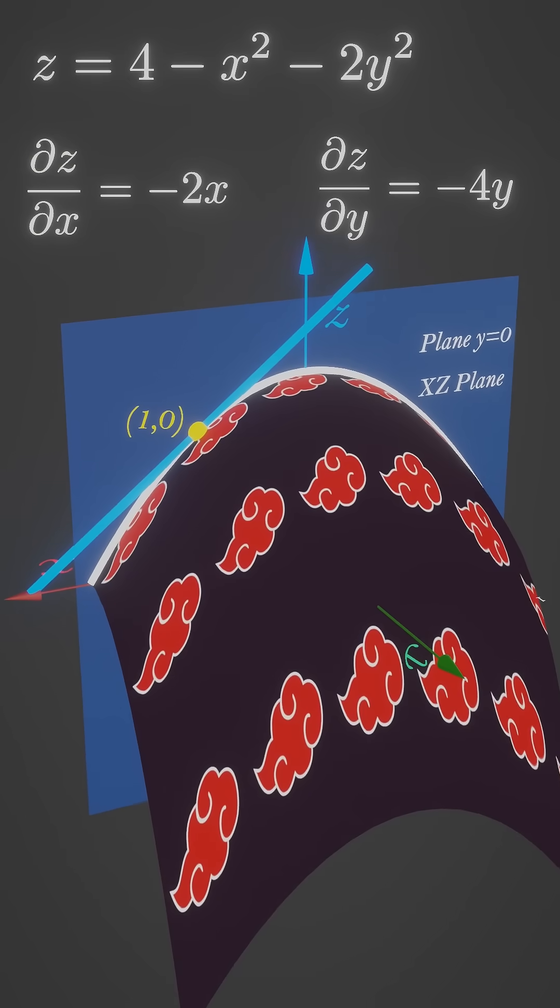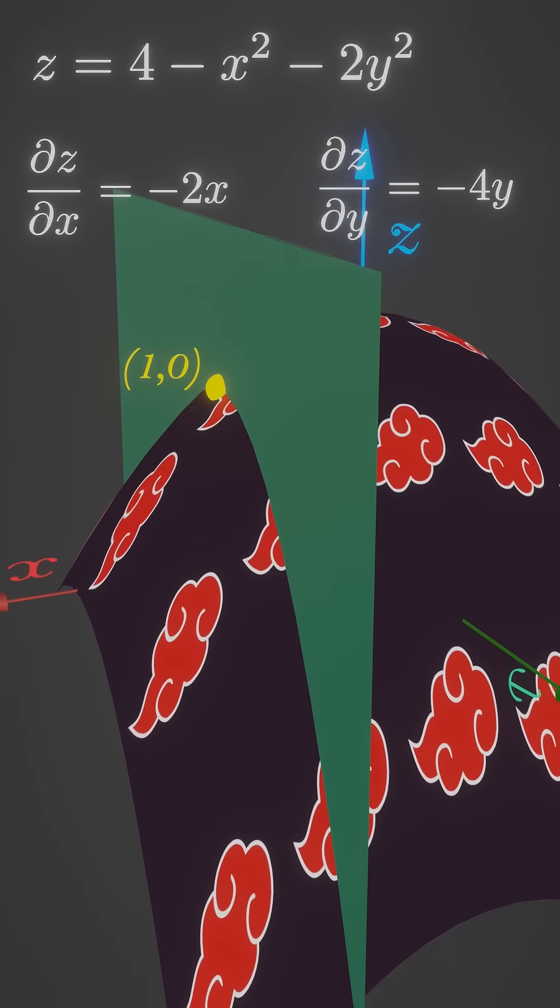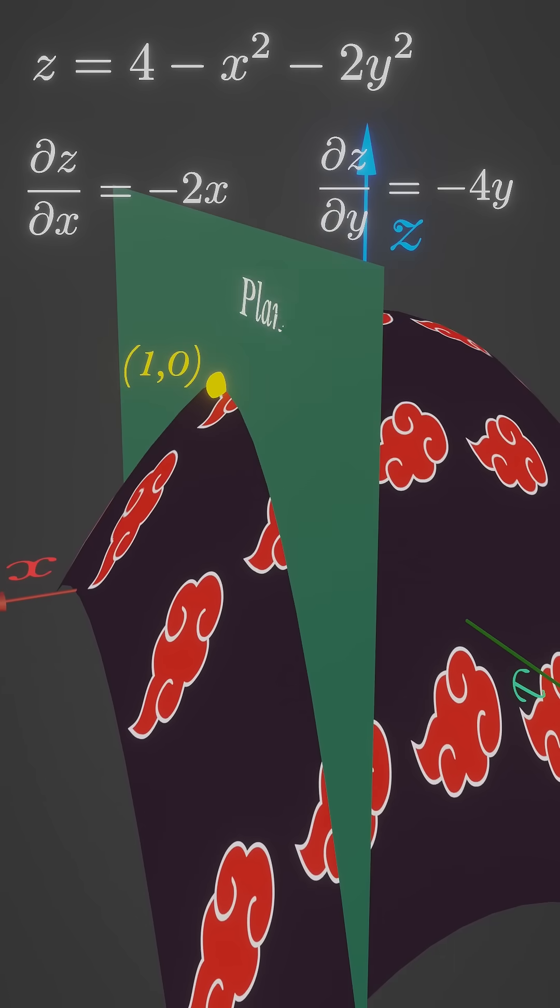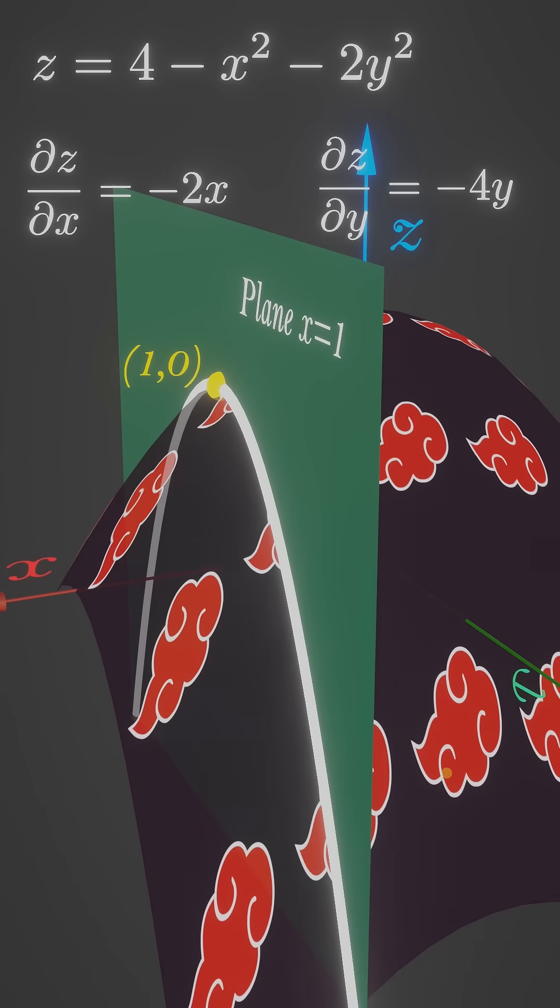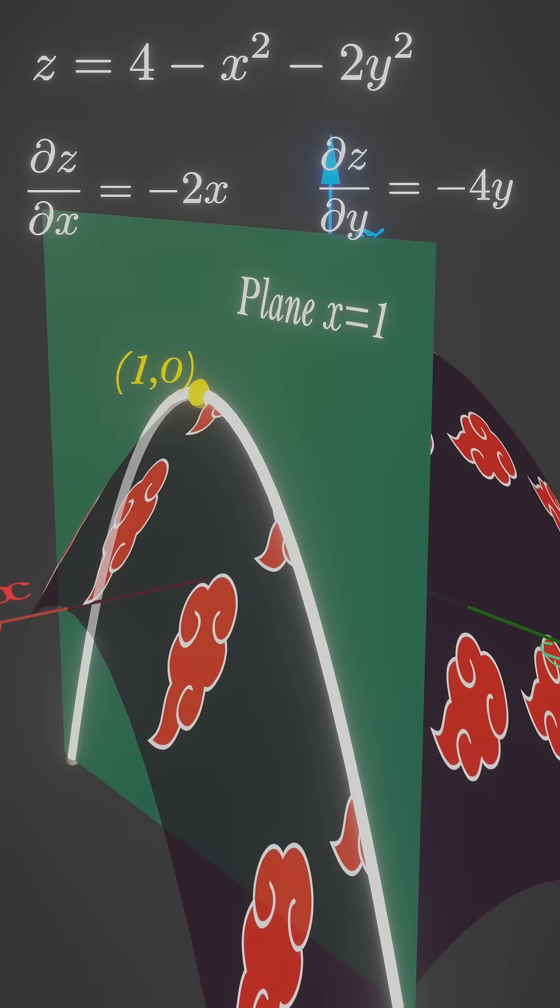Similarly this time, cut the surface by vertical plane at x equals one. The plane x equals one and the surface creates another curve. Since x equals one is fixed, partial derivative with respect to y is the slope of this curve.